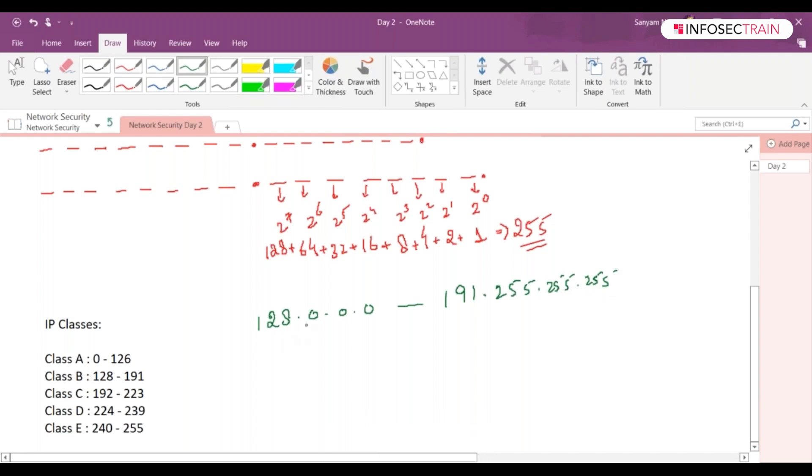The first IP is 128.0.0.0, next will be 128.0.0.1, another one will be 128.0.0.2, so until what was the max value?